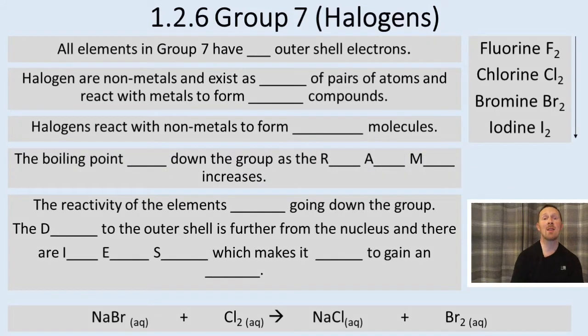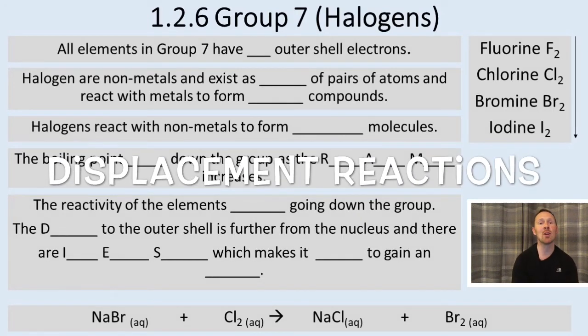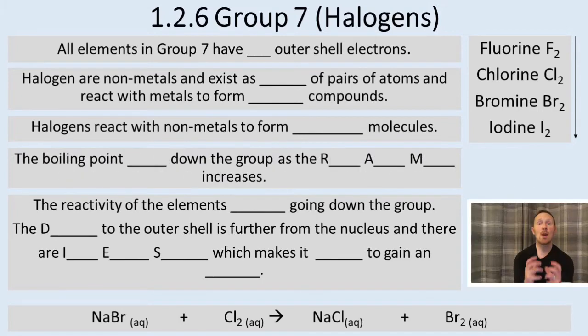When you consider the relative reactivity of the halogens, you can compete them against each other. The competition is called a displacement reaction. Chlorine in this example is more reactive than bromine, so chlorine atoms will displace or kick out the bromide ions, forming bromine. The chlorine atoms will become chloride ions.